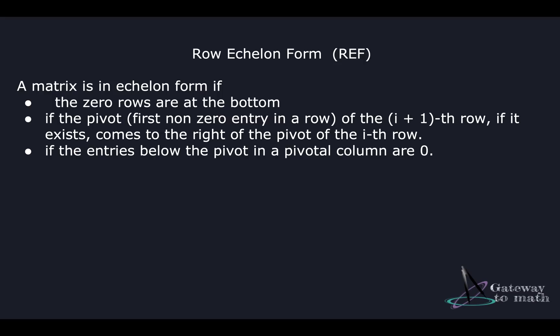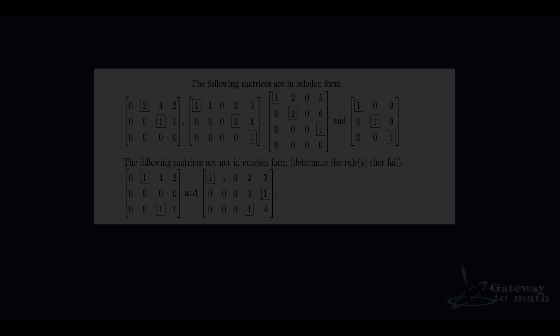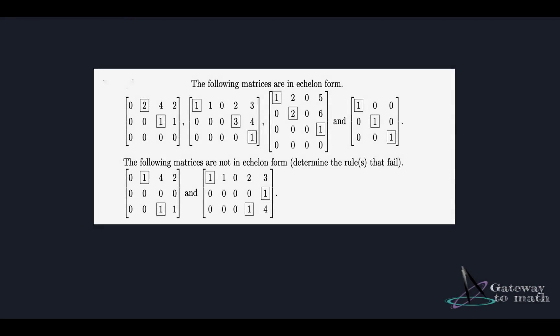Why should I bring a matrix in row echelon form? Because the original goal is to actually find the values or the solutions of linear equations. By bringing the matrix in row echelon form, I'm actually finding the solutions for that equation. Let's see how that happens — but first, let's try to identify some matrices in row echelon form.